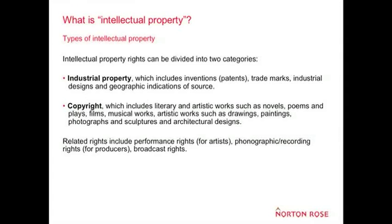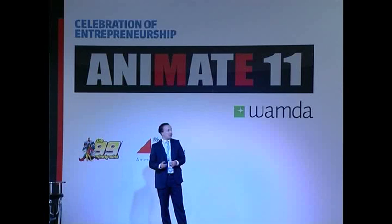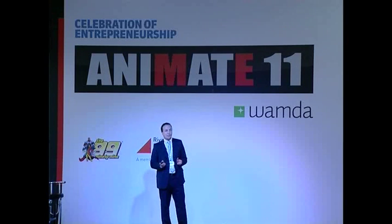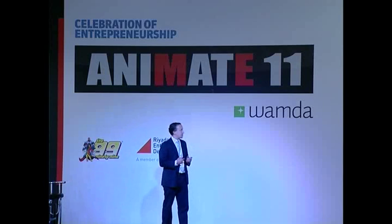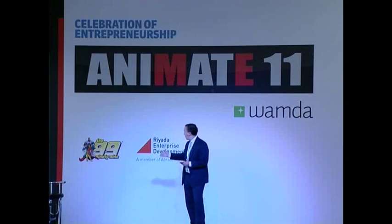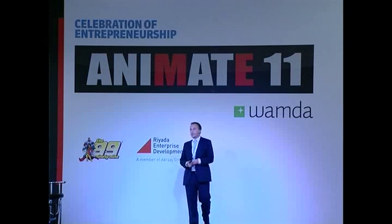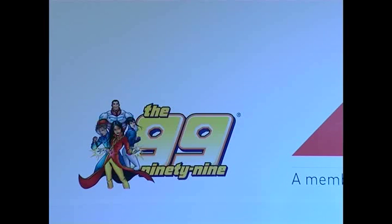There are two main types of IP. Industrial property is probably less relevant to the animation industry — so inventions and patents are unlikely to trouble you too much unless you're on the technology side of animation. But trademarks are very important — brands, for example, you'll see the '99' with the little R in a circle indicating a registered trademark, which it is in the US and several other countries.